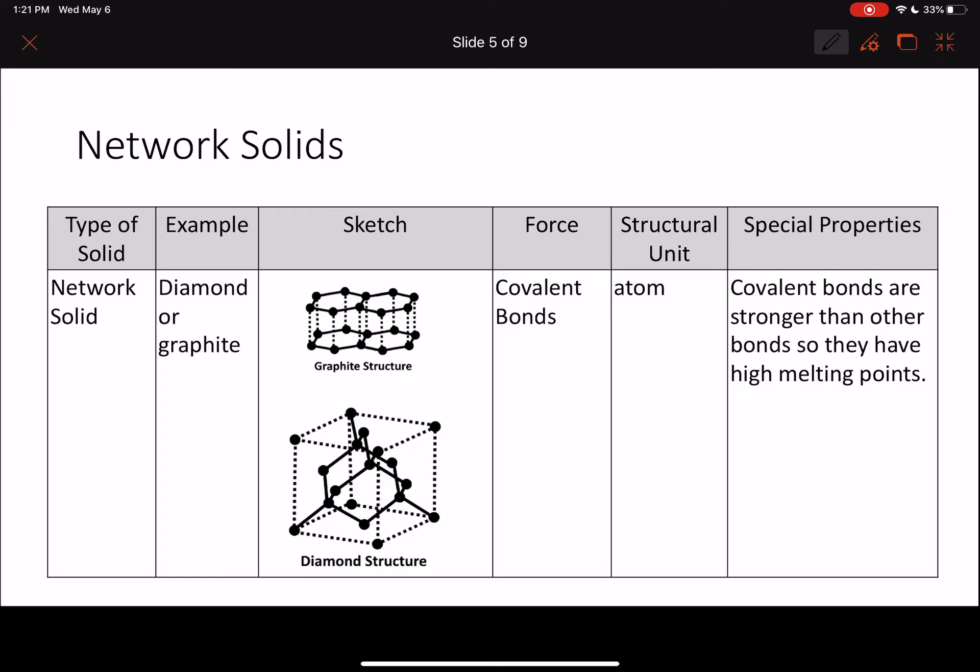Our last type of solid is called a network solid. This one is totally new. An example of this would be diamond or graphite, and you can see these structures here. In these structures, you have an intermolecular force here, but most of the bonds are held together by covalent bonds. That is especially the case in diamond. All of these solid lines are covalent bonds.